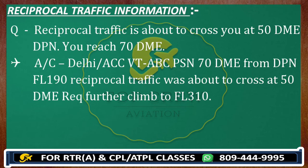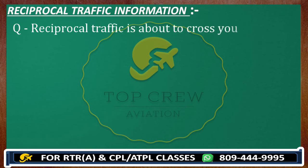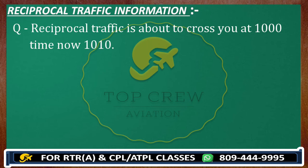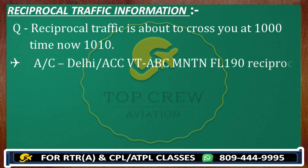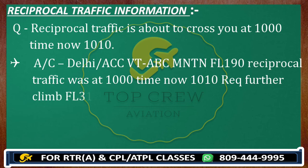Now we will discuss about time. Let's say reciprocal traffic is about to cross you at 1000, time now 1010. Reciprocal traffic was about to clear at 1000, now the time has passed. You would ask for further instruction: Delhi control, Victor Tango Alpha Bravo Charlie, maintaining flight level 190. Reciprocal traffic was at 1000, time now 1010, request further climb flight level 310. This is how we react in terms of time, DME, or flight level.